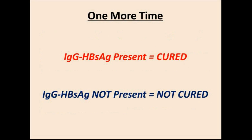You need to memorize and engrave this within your head: IgG against the surface antigen means that you are cured. So if you find this in the blood, it means you are cured. If there is no IgG against the surface antigen, that means you are not cured.